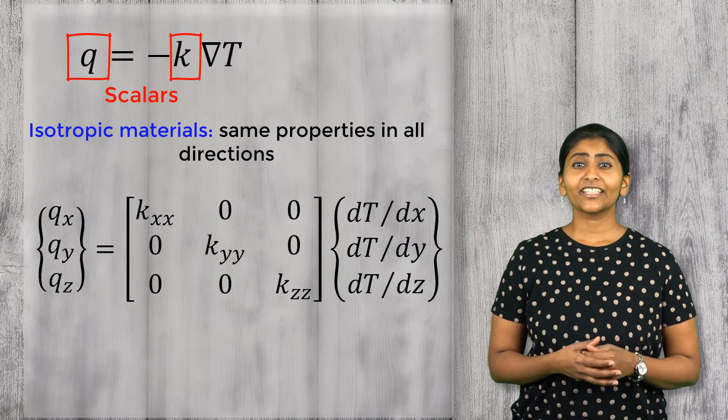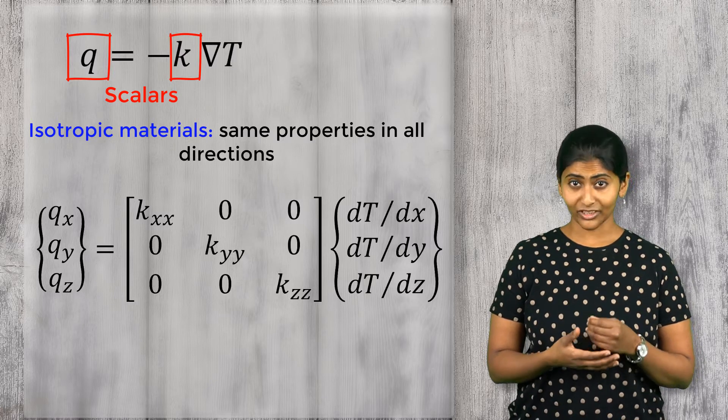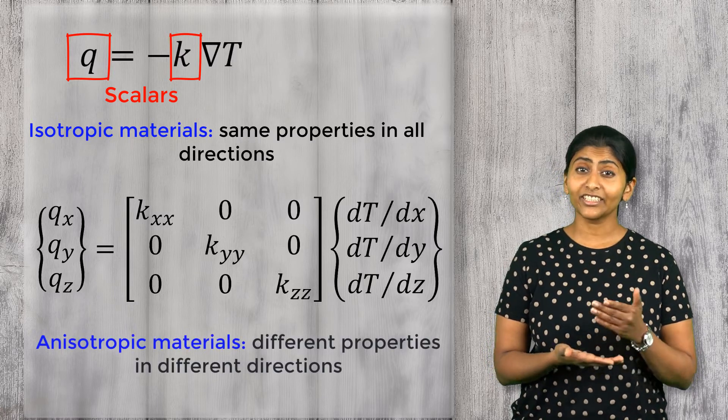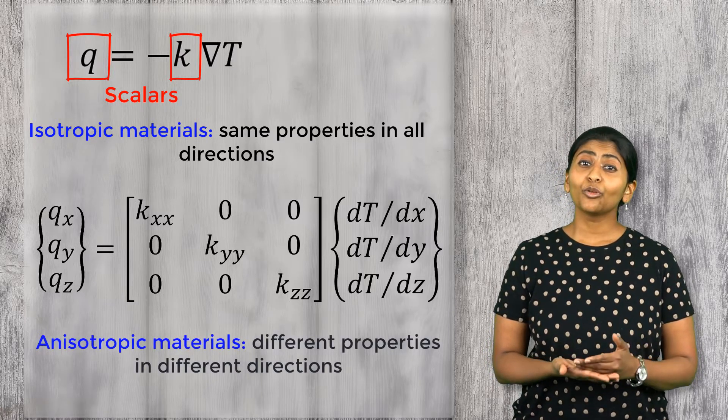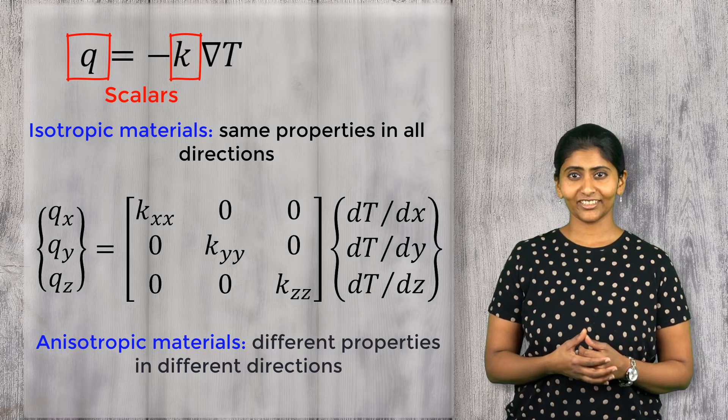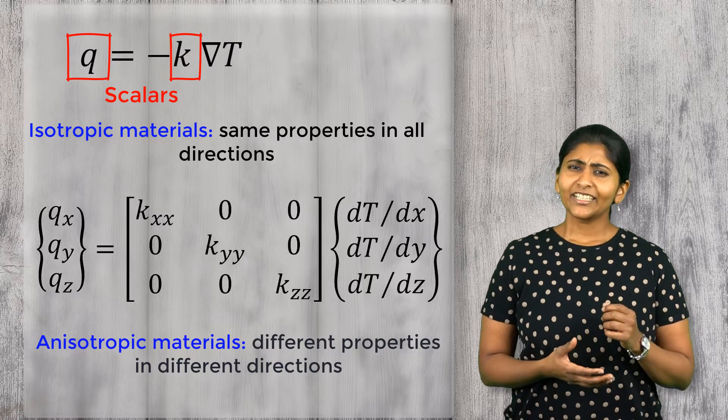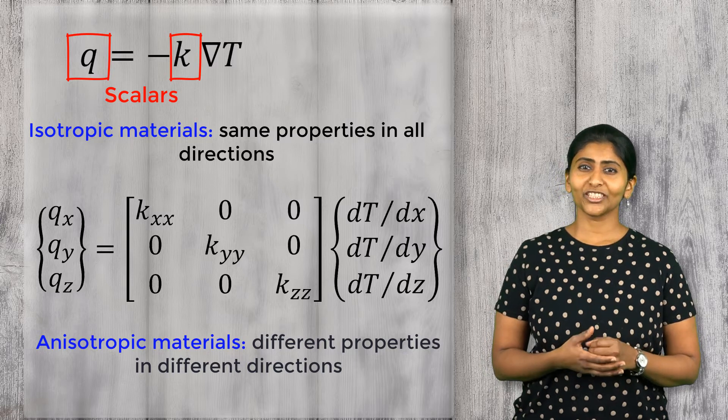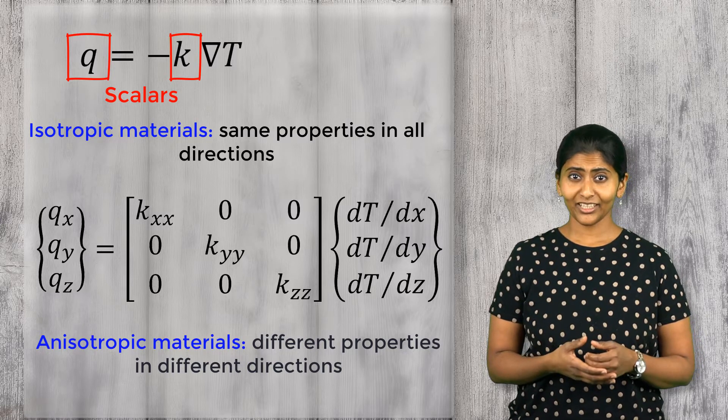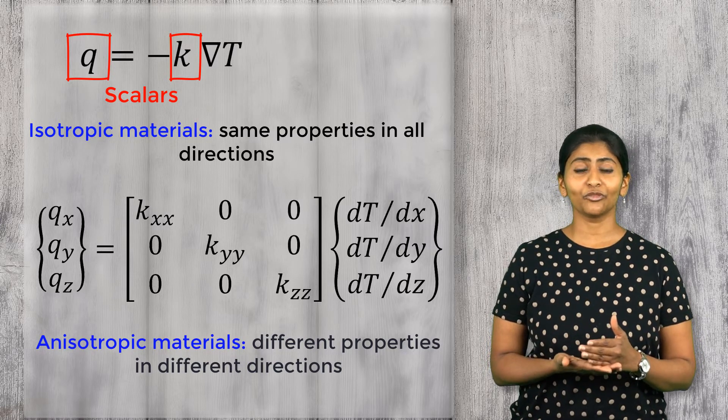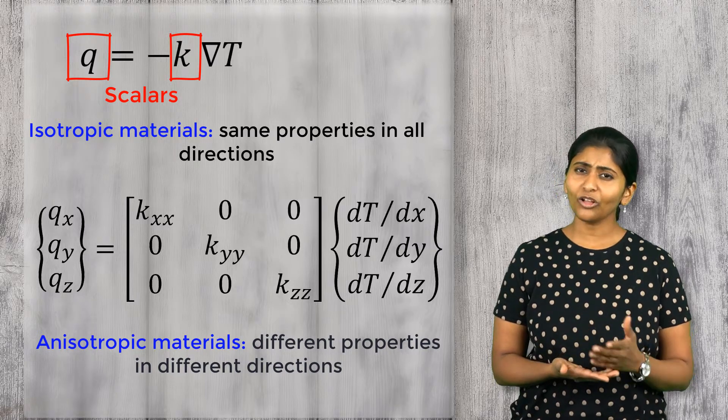Such materials can have different values of thermal conductivity in different directions and are known as anisotropic materials. Typically, most homogeneous materials are isotropic and have the same value of thermal conductivity in all the directions.